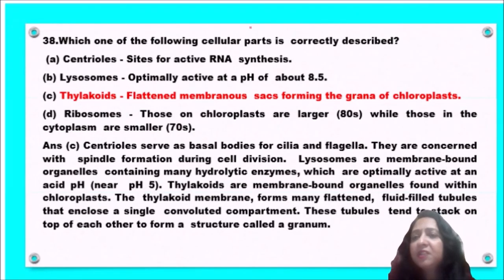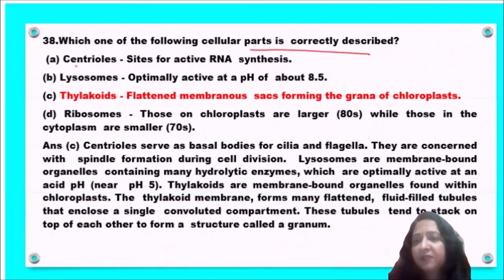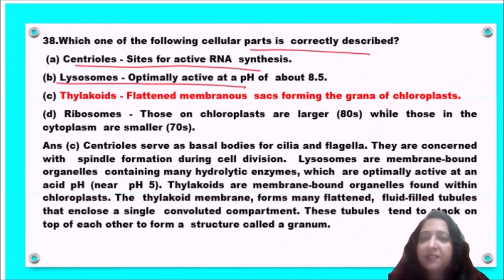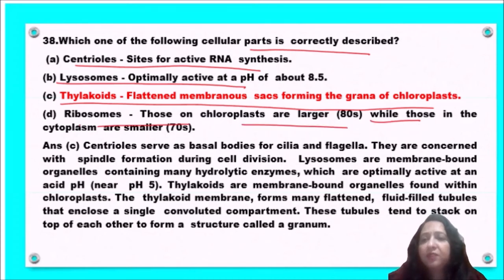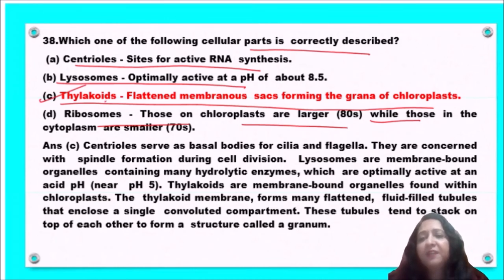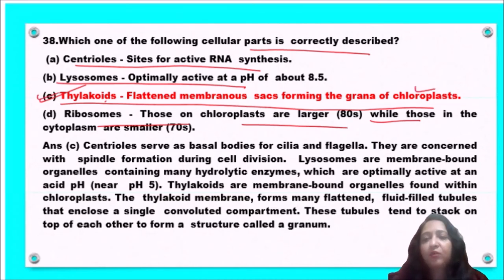Next question: which of the following cellular parts is correctly described — centrioles as sites for active RNA synthesis; lysosomes; thylakoids as flattened membrane sacs forming the grana of chloroplasts; or ribosomes as 80S units in chloroplasts? Thylakoids are flattened membrane sacs forming the grana of chloroplasts. This is the correctly matched option — option C is the correct answer.